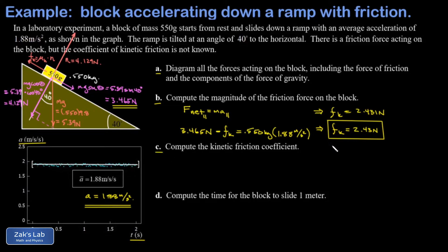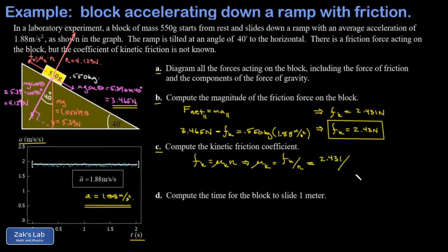In part C we find the kinetic friction coefficient. Now that we have the friction force, I write fk = μk times the normal force. Using the more precise friction force of 2.431 newtons and the normal force of 4.129 newtons, I get a kinetic friction coefficient of 0.589.